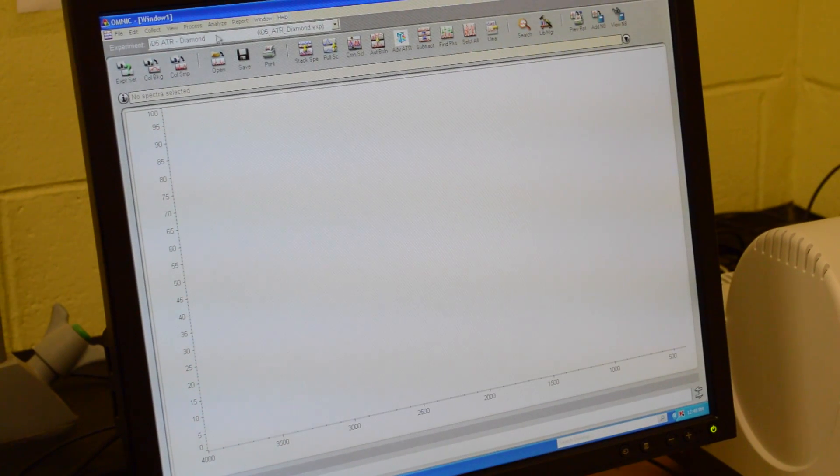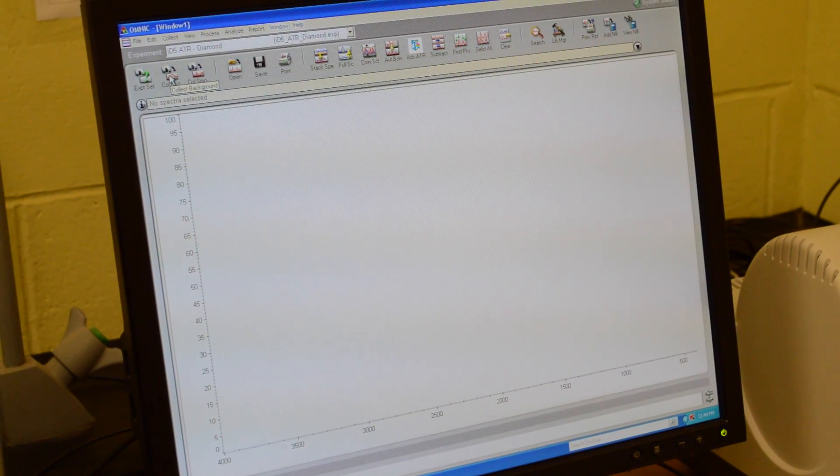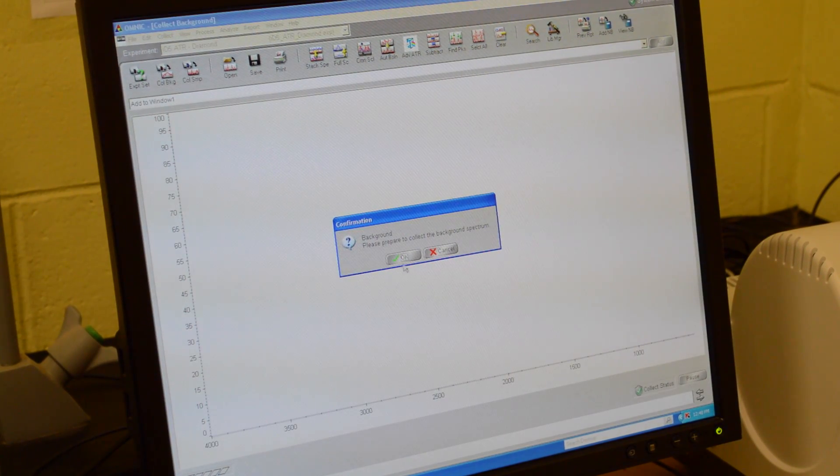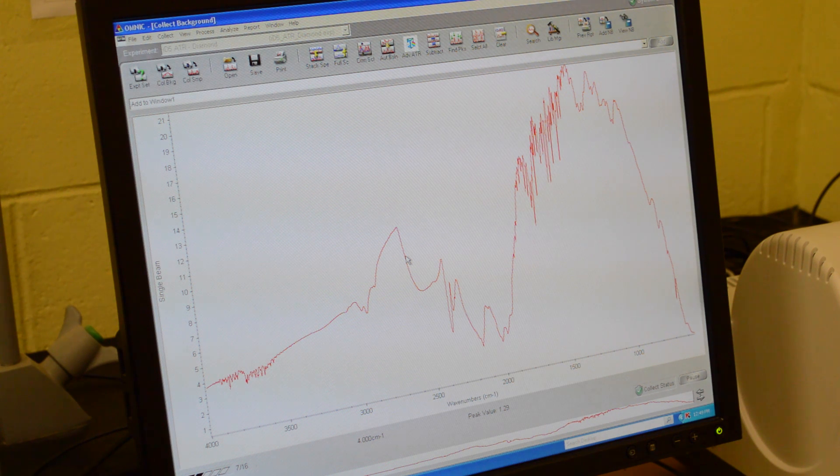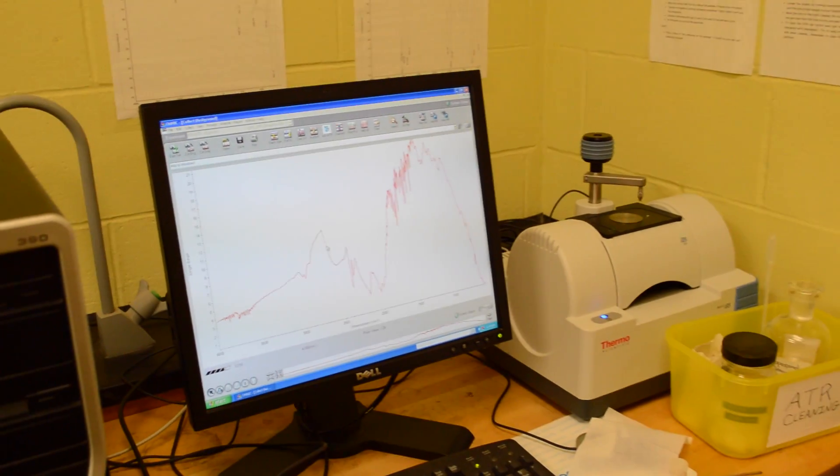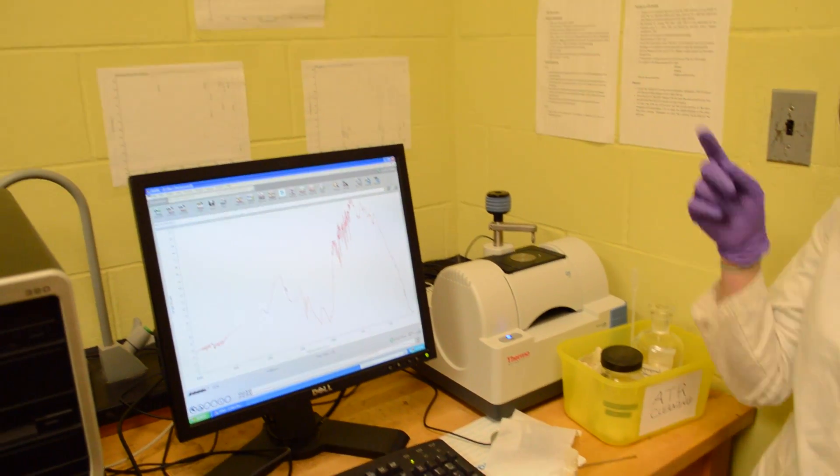Now the first thing you want to do is collect an air background. Press collect background, it says please prepare to collect background, if you're ready press OK. It will scan 16 scans. This is what you normally expect an air background to look like. It's very messy but this is what it should look like. If you're ever unsure, there's an air background posted on the wall.